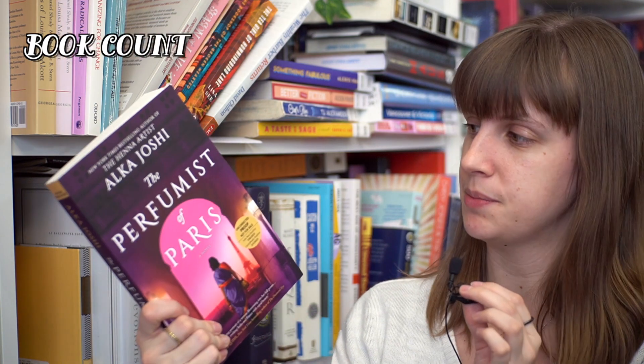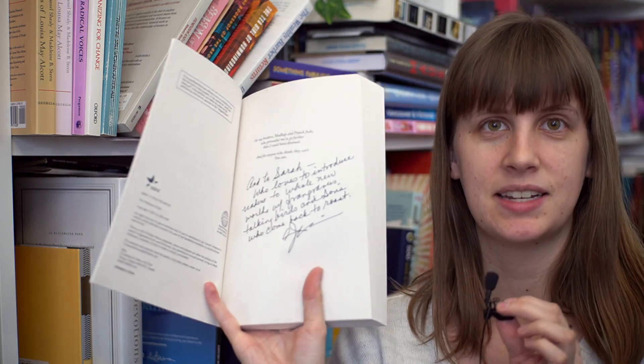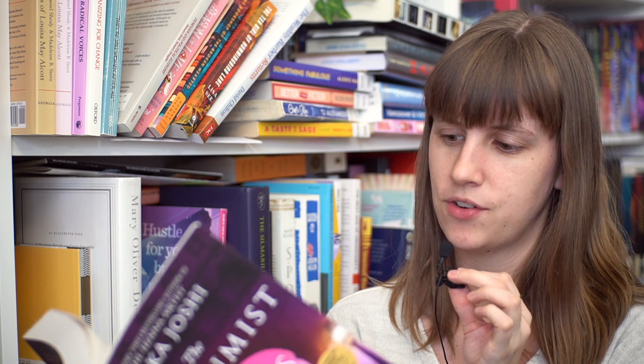From the same event I have The Perfumist of Paris by Alka Joshi. This is also an arc. She actually was at the event. She signed the book for me and it says Auntie Sarah who loves to introduce readers to whole new worlds of fragrances, talking birds, and sons who come back to roost. This is the third book in the like Hannah Artist series. I still haven't read the second one. Sorry Alka. But I'm getting I'll get there. I'll get there eventually. They're historical fiction set in like the 60s in India and the first one was excellent and this one is in the 70s and follows like the sister of the main character. I feel a little bit like Mike's Mike with this.